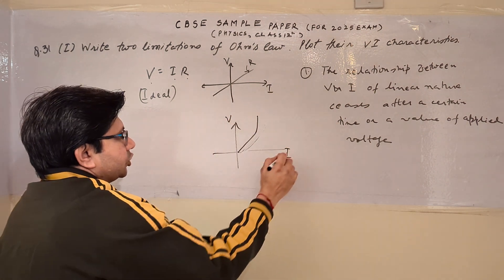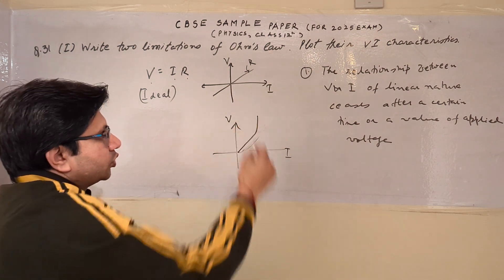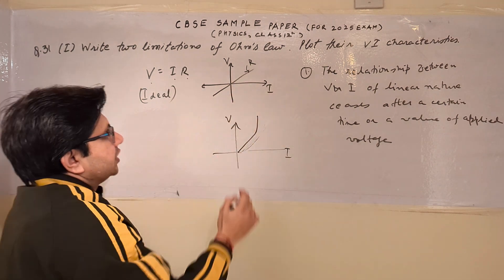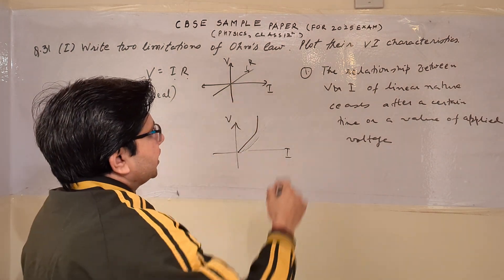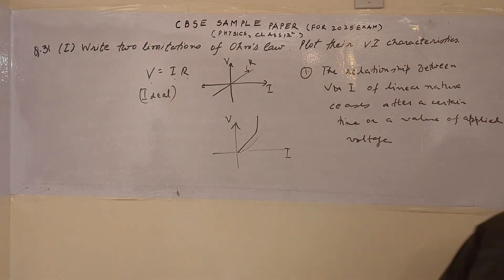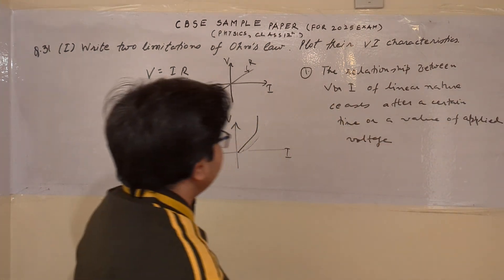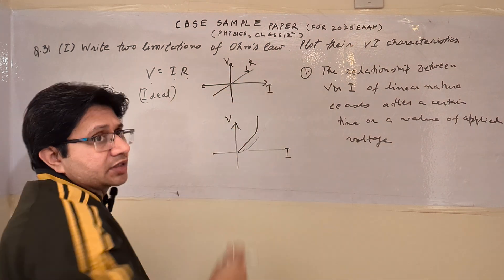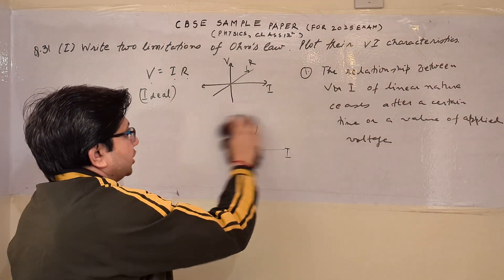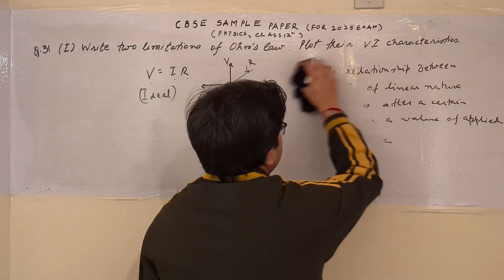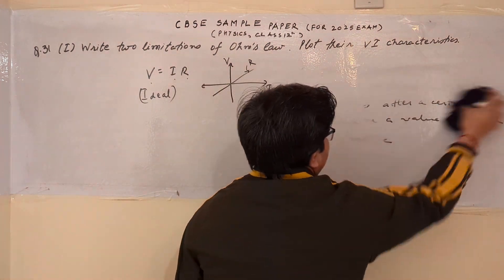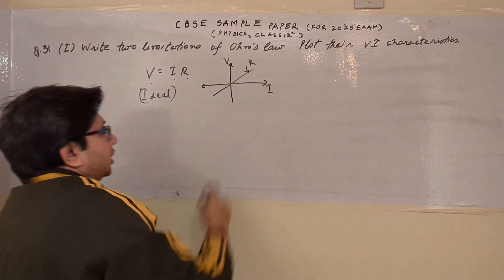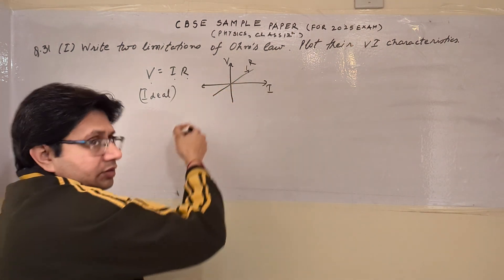Up to a certain extent it is linear, then it deviates. So this is the first deviation and the first reason with its corresponding graph. The second limitation is that if we change the sign of the voltage, ideally the graph must remain a straight line. If we change the sign of the voltage to negative, the graph should still look like a straight line.